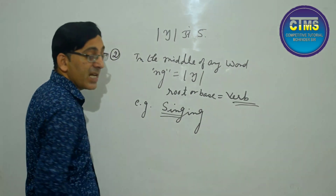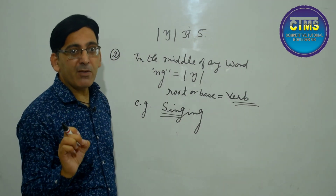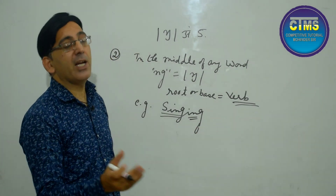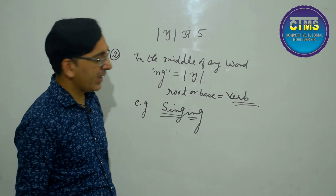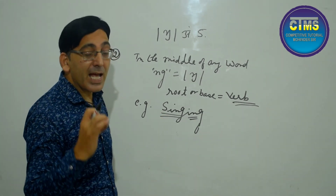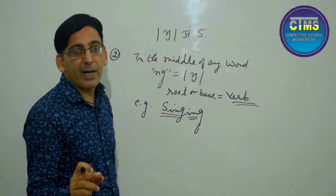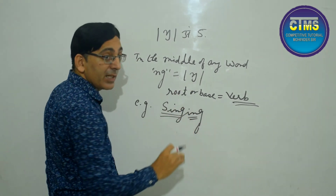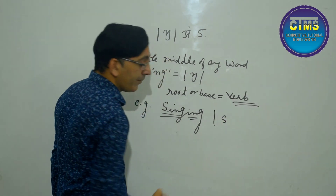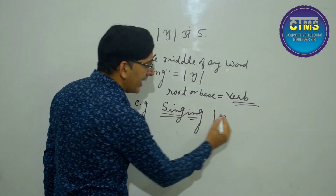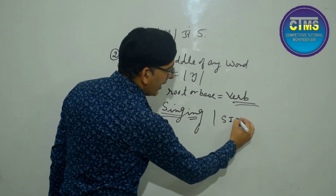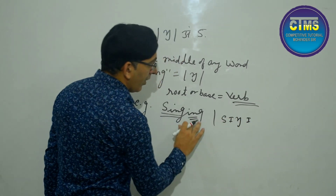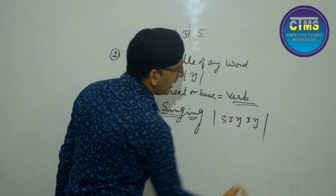The main word here is S-I-N-G — this is our root. I-N-G is a suffix — something added to the back of a word. Our main word S-I-N-G is a verb. So the N-G in the middle still gives ŋ. The small 'i' (I-I-E) gives the short /ɪ/ sound, and the N-G at the end you already know gives ŋ.